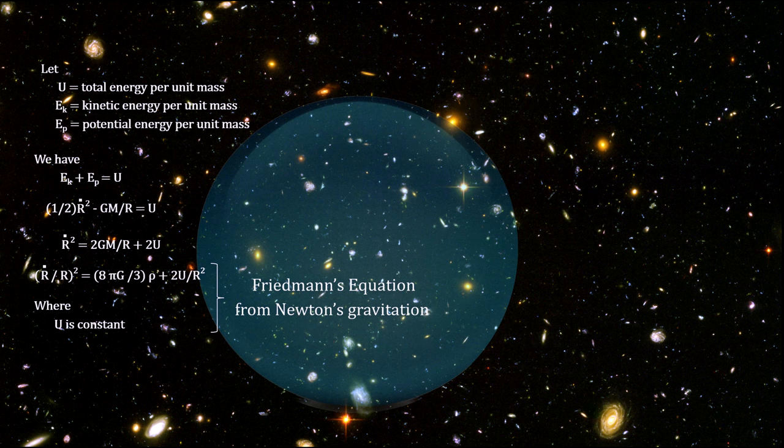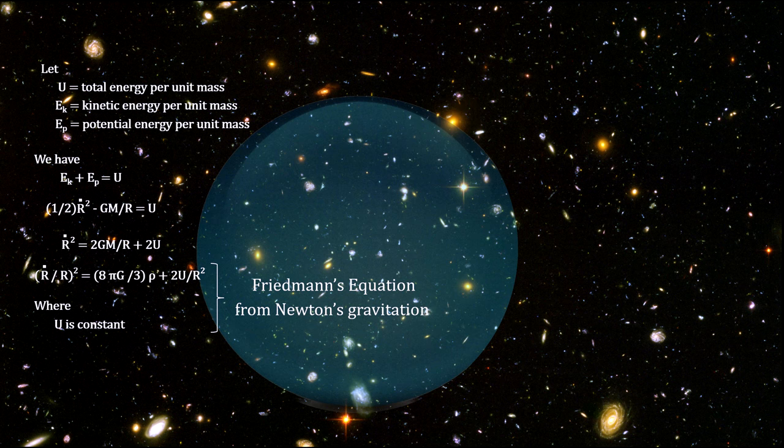Looking at it from an energy point of view, Alexander Friedmann, a Russian mathematician and physicist using Newton's model, developed an equation, now named after him, which showed how the universe would behave under various initial conditions.